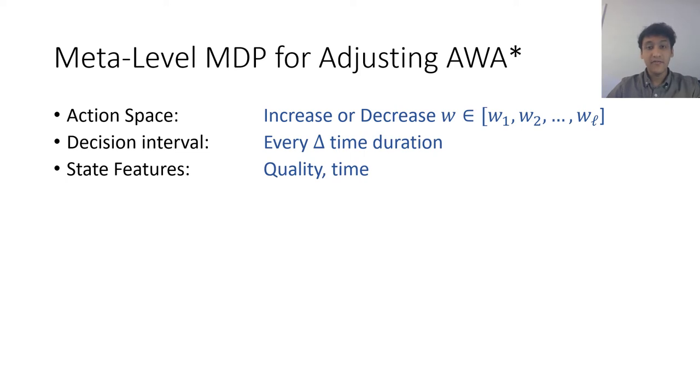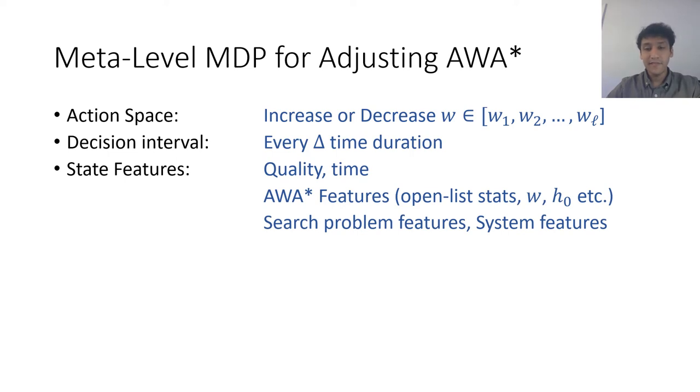The state features are the quality of the latest solution, the time remaining, and AWA star features such as the mean g value of the nodes in the open list, the current weight, the heuristic of the starting node. Then there are the search problem specific features such as the number of cities if we are solving the traveling salesman problem. And then there are the system features such as the CPU availability.